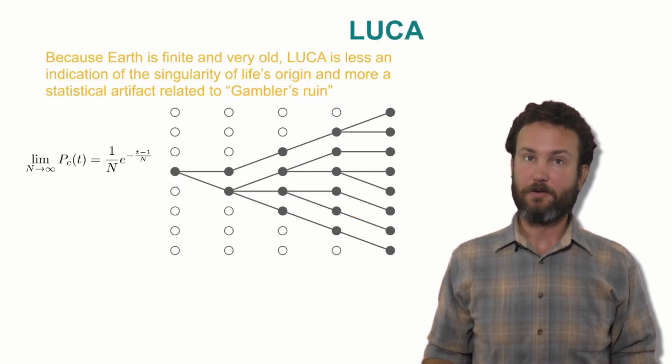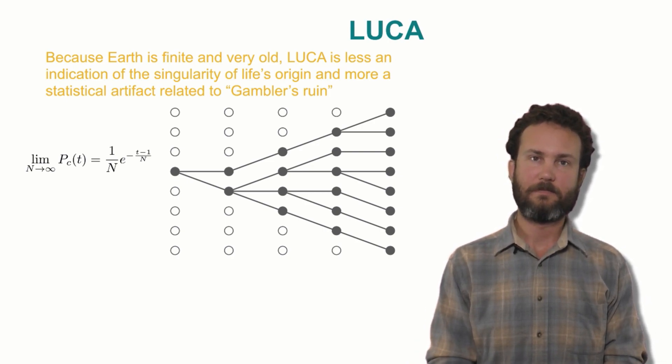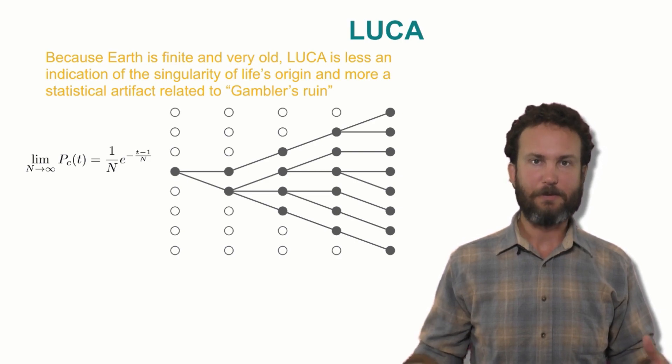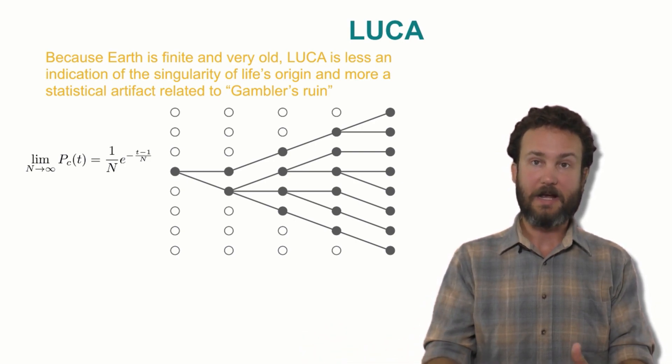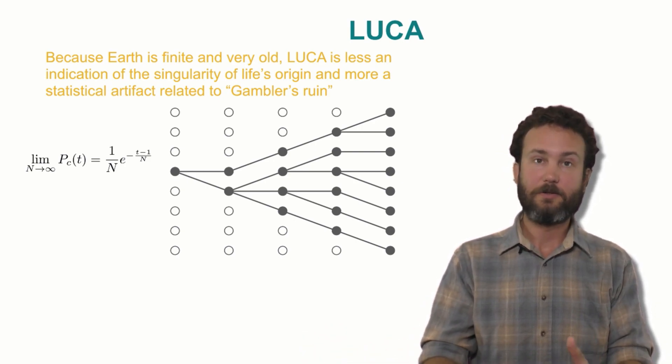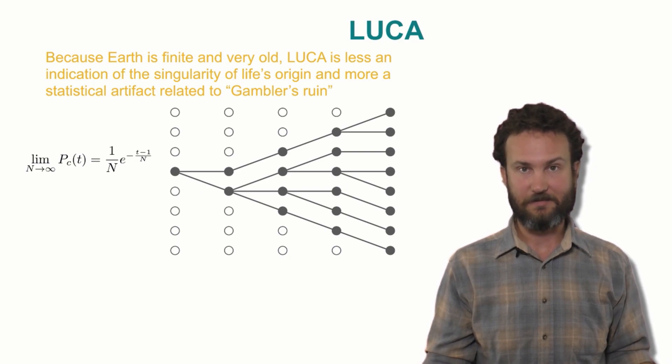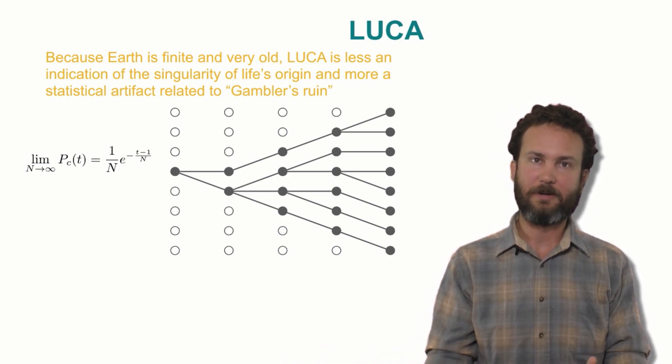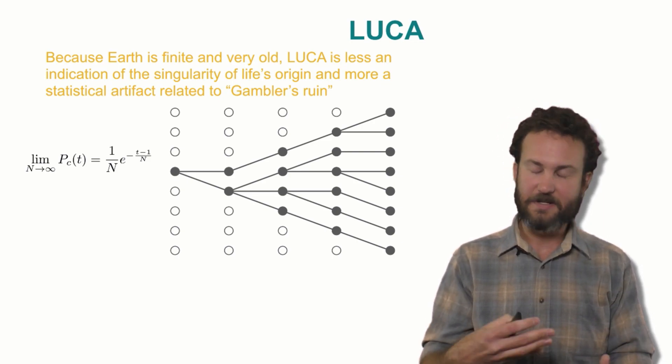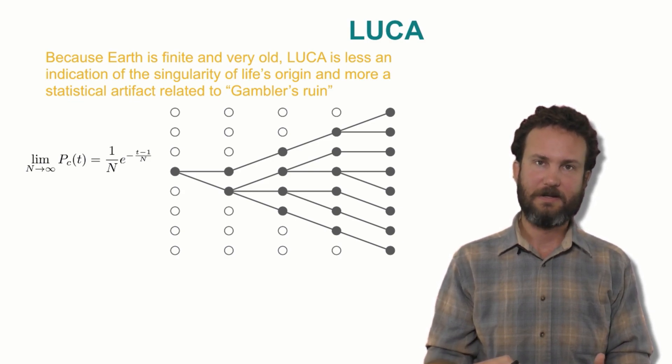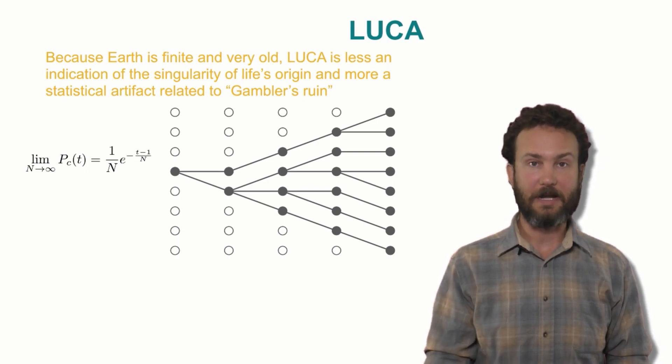Before continuing, I want to take a side note about the implications for the last universal common ancestor. So the fact that the Earth is finite and we have finite populations means that all of life tracing back to a last universal common ancestor could be an indication that life only has one origin, but it could also mean that the Earth is finite and that tracing back to a single common ancestor is a statistical artifact or even an inevitability of a stochastic process happening in a finite space.